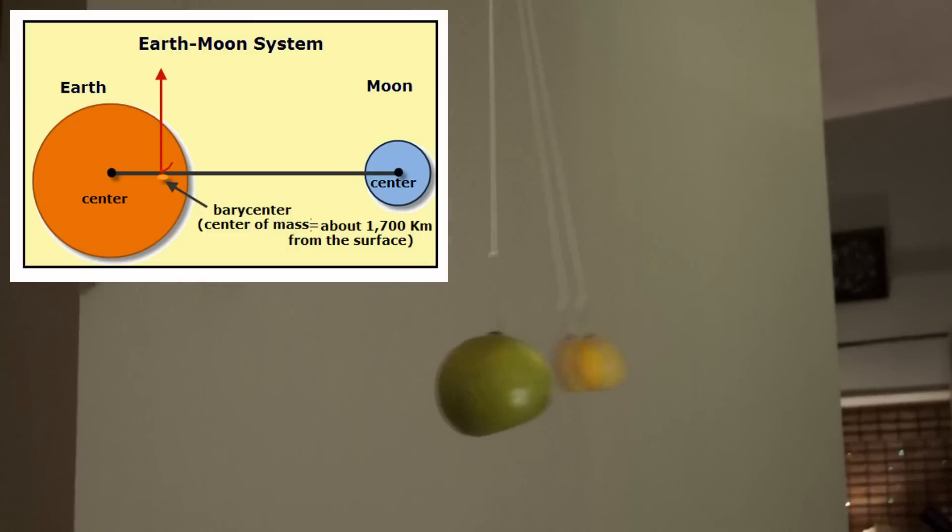In the case of the Earth-Moon system, since the Earth is much more massive than the Moon, the barycenter is actually within the diameter of the Earth. But if you were really to see closely the orbit of the Earth and the Moon, you would see that the Earth does wobble a little bit, because they are rotating around a barycenter.